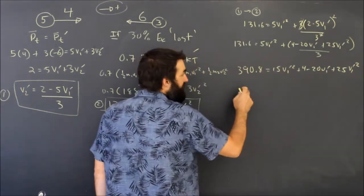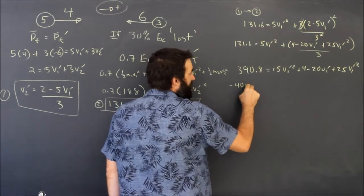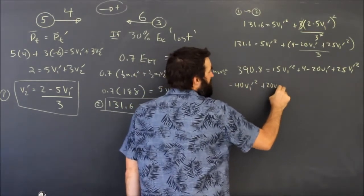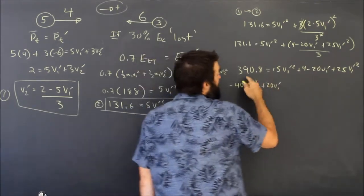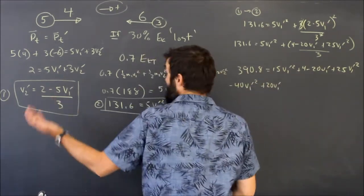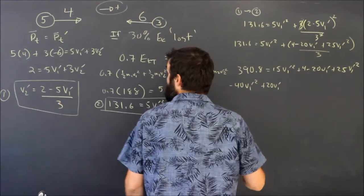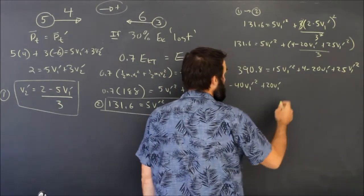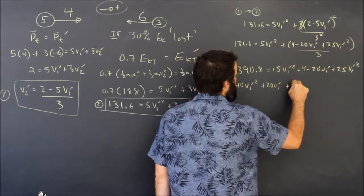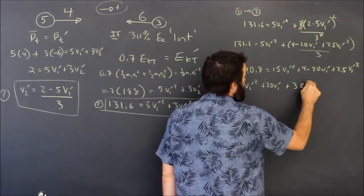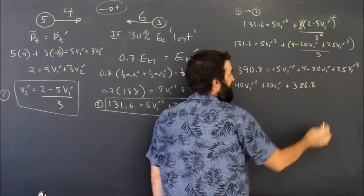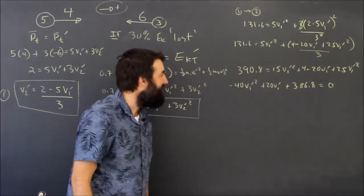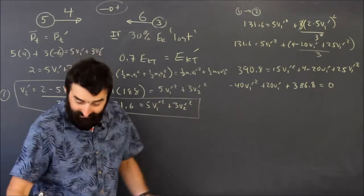Moving it all over to the left side again, I'm going to get negative 40 v1 prime squared, just like before, plus 20 v1 prime, just like before. But instead of 500 and something, I'm going to end up with, what's 390.8 minus 4, I'm going to end up with 386.8. In my head I just did some math, okay, no big deal.